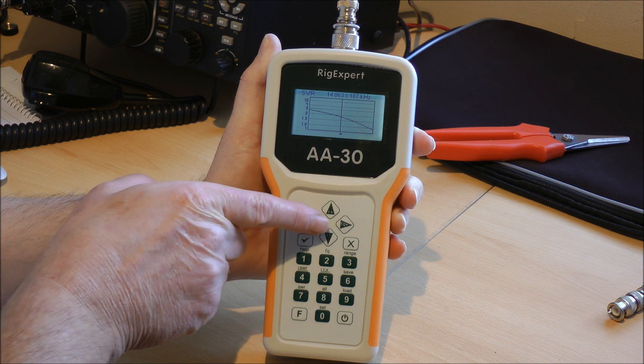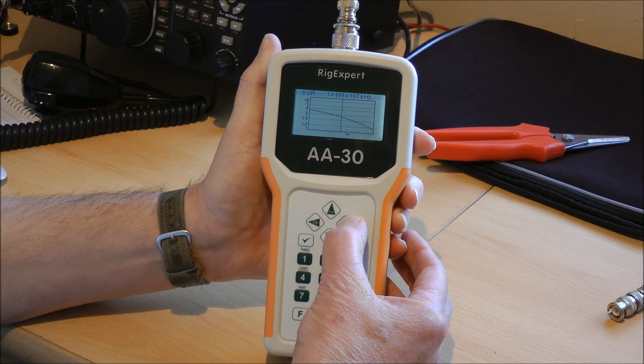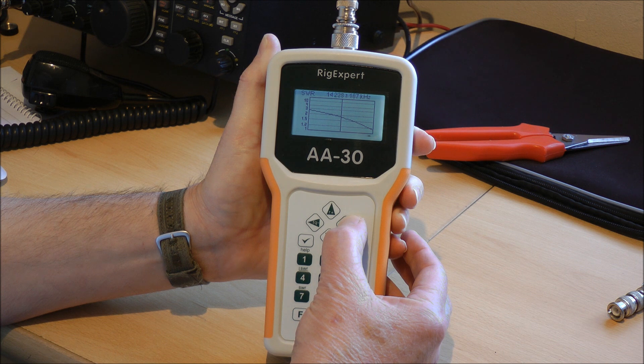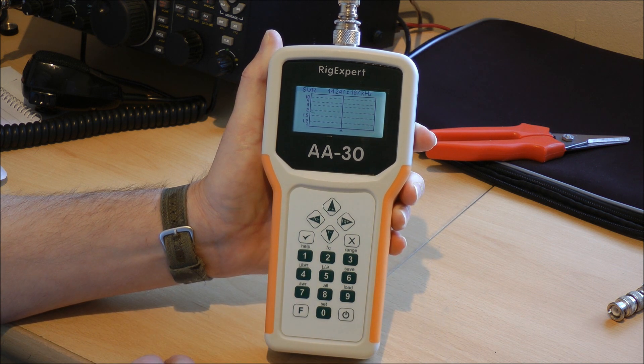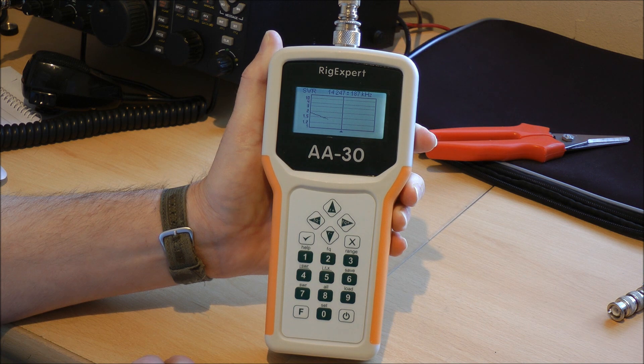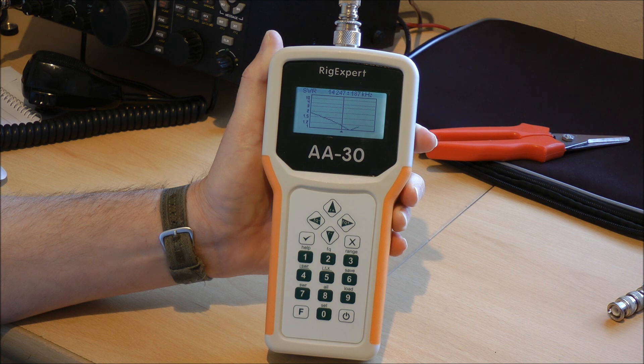The lowest you can use this button here to scan further up and check. So you scan along and then hit the OK button again and it will redo the scan. You can see where it's dropping now, so about 14.050 or so, that's where it's the lowest SWR. Very handy function.